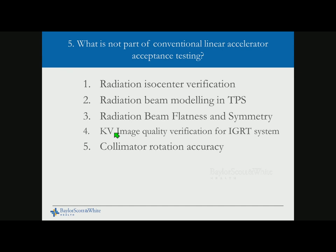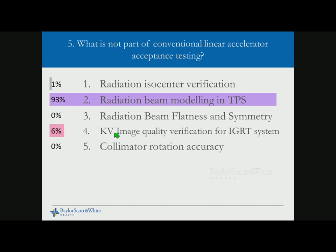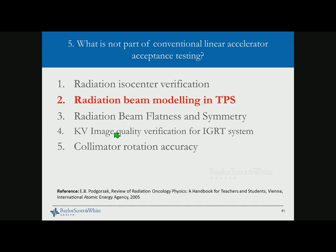SAM question: What is not part of conventional linear accelerator acceptance testing? Options: radiation isocenter verification, radiation beam modeling and treatment planning system, radiation beam flatness and symmetry test, KV image quality verification for IGRT systems, collimator rotation accuracy. The answer is radiation beam modeling and treatment planning system — that belongs to commissioning, where you collect baseline data and prepare for modeling, unlike specialized systems like tomotherapy or CyberKnife which come with beam models.